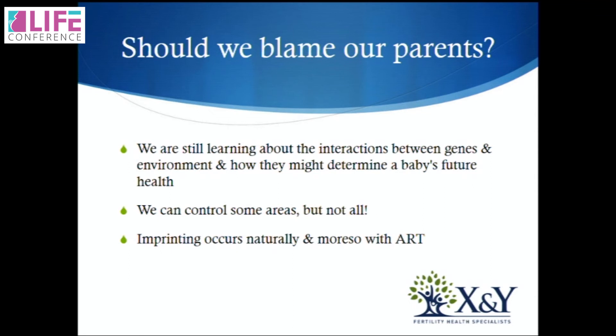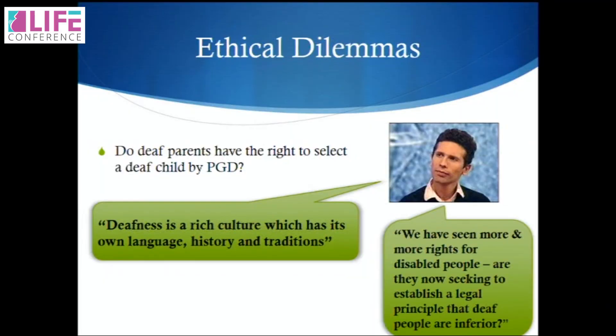Should we blame our parents? We're still learning about the interactions between genes and the environment and how they might determine the baby's future health. We can control some areas but not all. We know that imprinting occurs more with IVF than with natural conception, so we need to consider that perhaps. Some ethical dilemmas to leave you with: a deaf man with a deaf wife came to the HFEA — he saw deafness as a gift and wanted to have a deaf child, but the UK wouldn't allow them to use PGD for that. He argued: 'Deafness is a rich culture with its own language, history and traditions. Are we establishing a legal principle that deaf people are inferior?' The UK said no, we're not going to provide you with a deaf child.